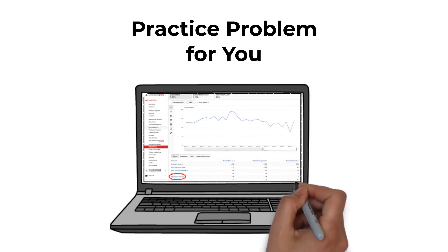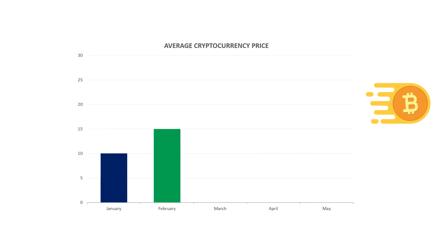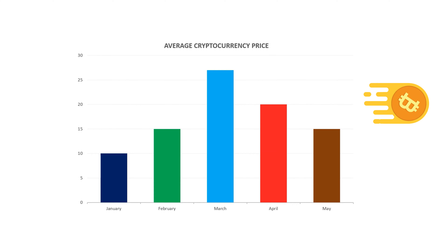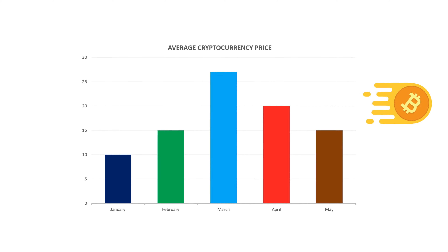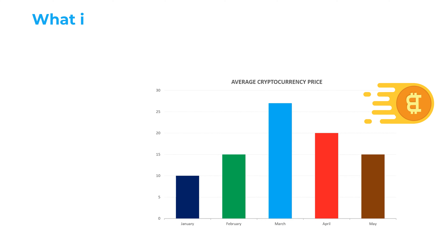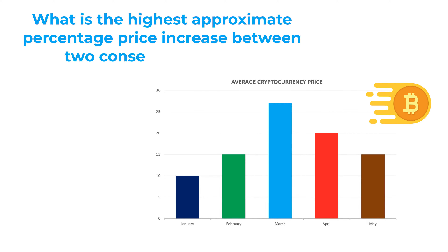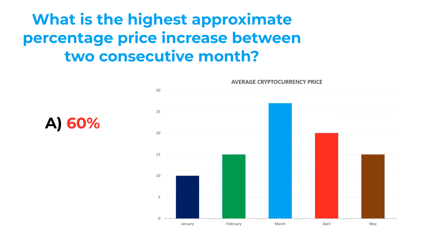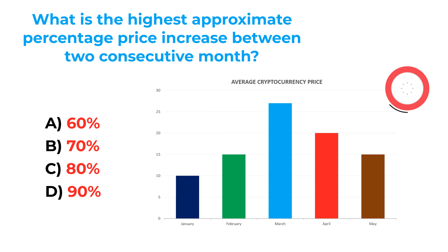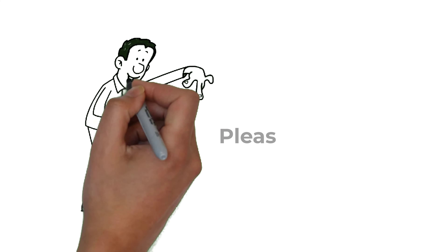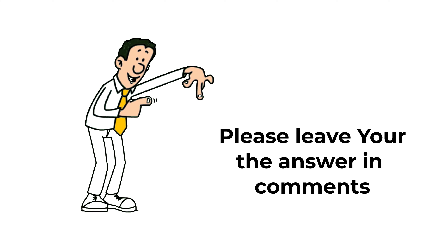Here's a practice problem: you're presented with a chart showing average cryptocurrency price for each month from January to May. You need to calculate the highest approximate percentage price increase between two consecutive months. Choices: A) 60%, B) 70%, C) 80%, D) 90%. Post your calculated answer in the comments.